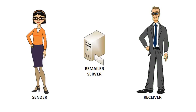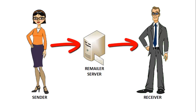The remailer process is quite simple and begins when a user sends an email message to a remailer server, along with the email address of the intended recipient. The remailer server then removes all information from the message which could identify the true sender, and replaces that information with its own identifying details. The message is then sent to the recipient with the remailer server acting as the sender, thus protecting the identity of the true sender.